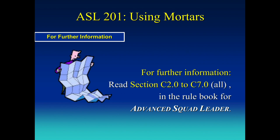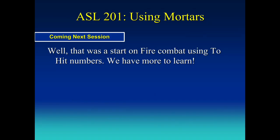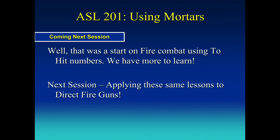So we have worked our way through mortars - you've spent about 40 minutes at this. For further information, you have a small section to read: section 2 to 7 in chapter C, reading all of 7. There's some heavy stuff there, but now that you've seen how it works, it should all be applicable. That was a start on fire combat using to-hit numbers. We have a lot more to learn - on the next set of slides, 9B, we're going to apply all of these exact things to firing a gun, one of those 5/8-inch counters. Hope to see you soon.